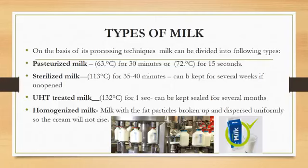Types of milk: on the basis of its processing techniques, milk can be divided into the following types — pasteurized milk, sterilized milk, UHT treated milk, and homogenized milk. These kinds of milk are treated with heat up to some extent. The time and temperatures are already mentioned. The purpose again for these treatments is to kill microorganisms, to increase shelf life, and for food consumption safety.